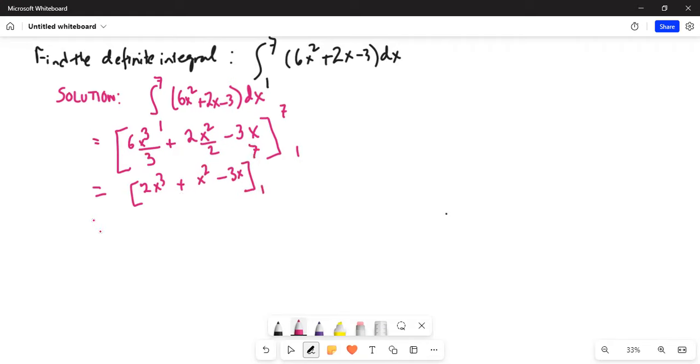First we'll put the upper limit. So, it will be 2 times 7 cubed plus 7 square minus 3 times 7 minus, we'll put the lower limit, 2 times 1 cubed plus 1 square minus 3.